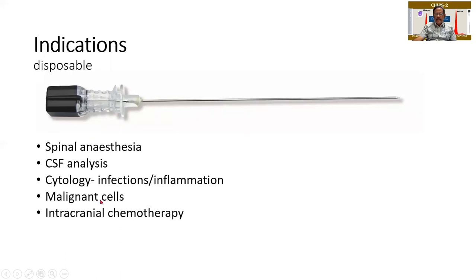The indications — that's what this slide is for. I was very surprised when a student answered spinal anesthesia, but then I realized that should be the first. So spinal anesthesia can be one indication. CSF analysis, of course, for cytology to rule out any infection, inflammation, or malignancy — the sample will come to pathology. Sometimes therapeutically they will be giving chemotherapy; intrathecal chemotherapy administration is by lumbar puncture.